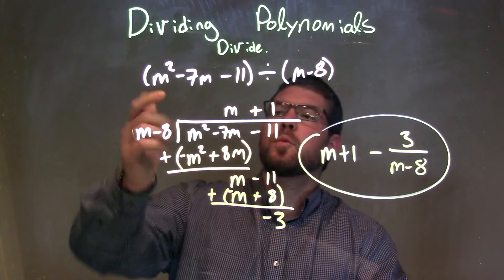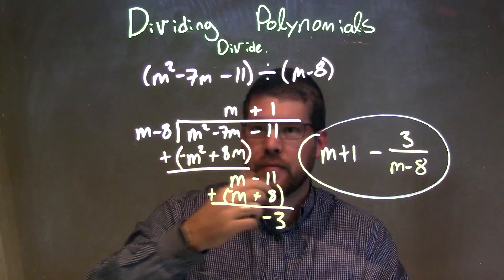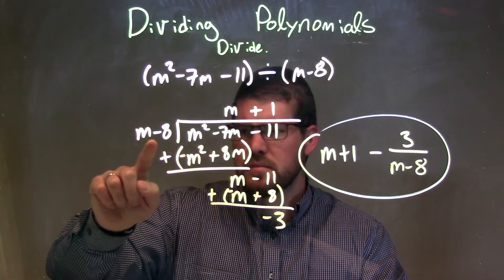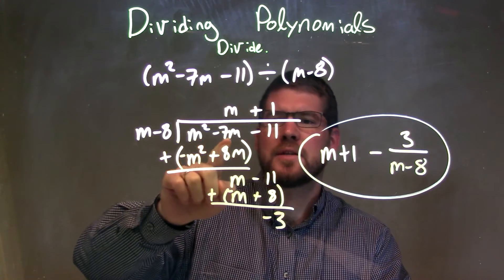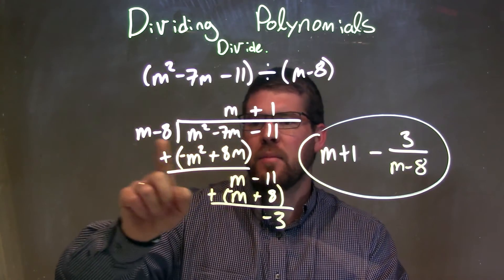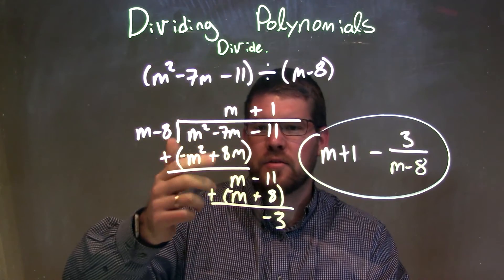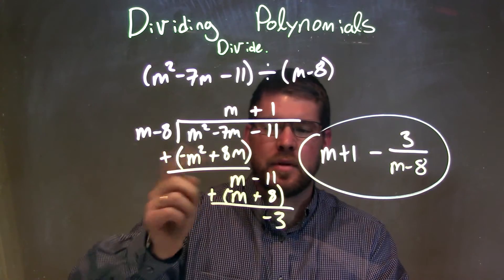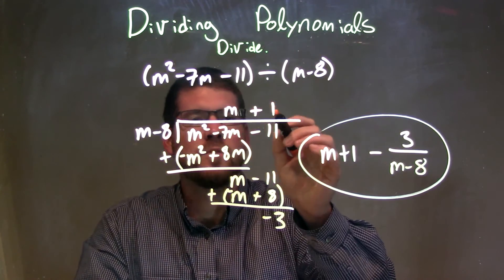Let's recap. We're given m squared minus 7m minus 11 divided by m minus 8. When I did my long division, I took m minus 8 and had it go into m squared minus 7m minus 11. m times m gave me m squared, and m times minus 8 was minus 8m. I then subtracted, and what's left is an m right here.